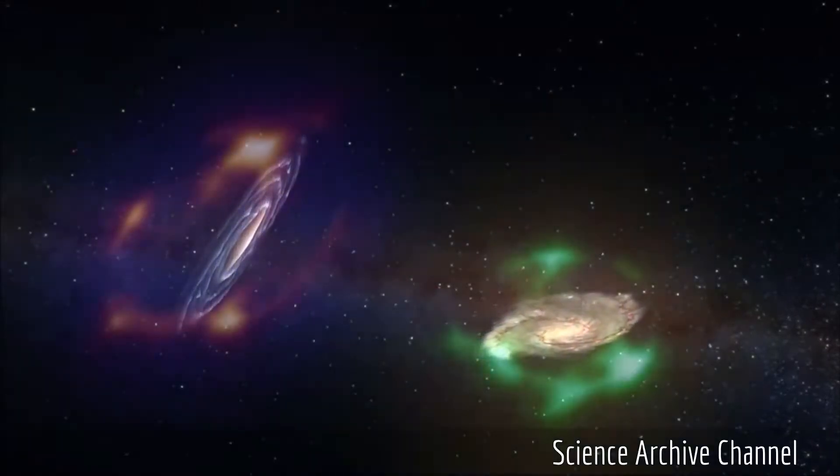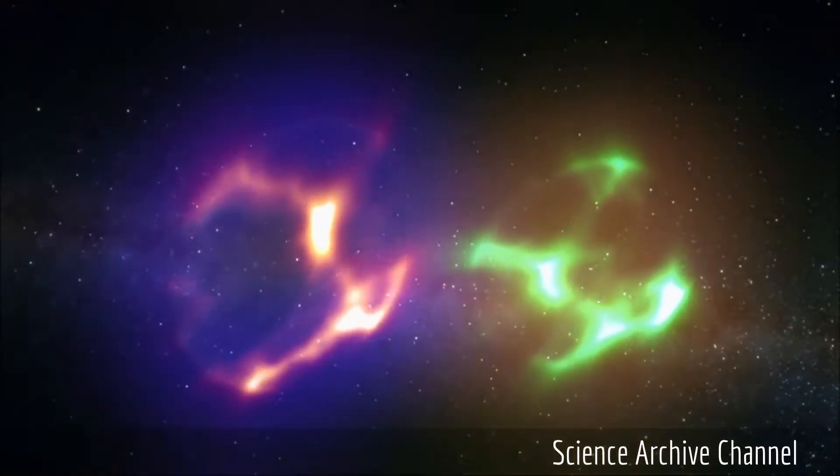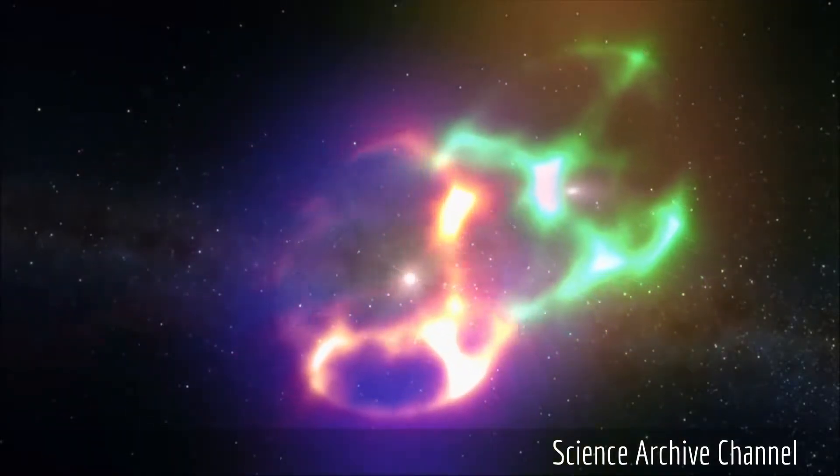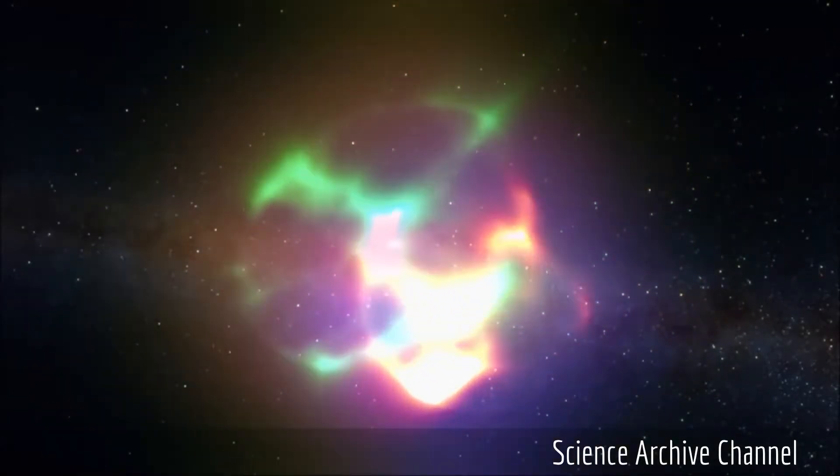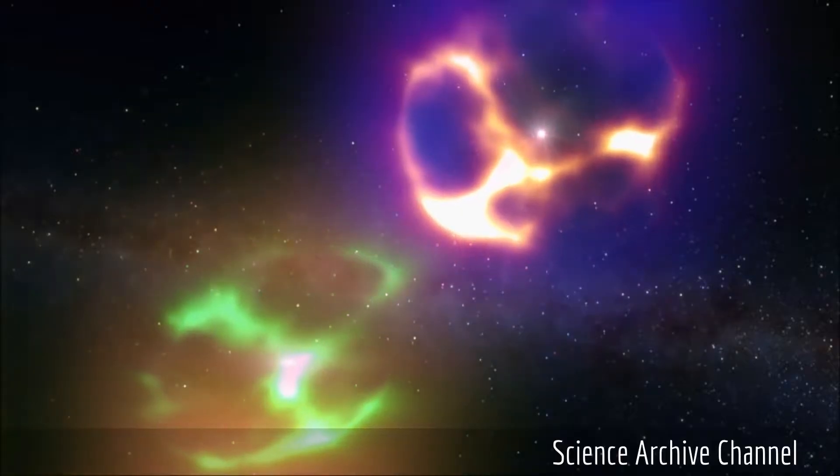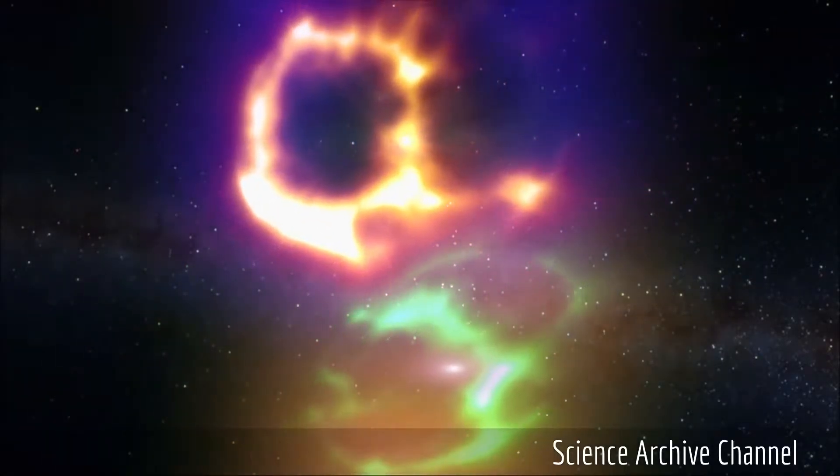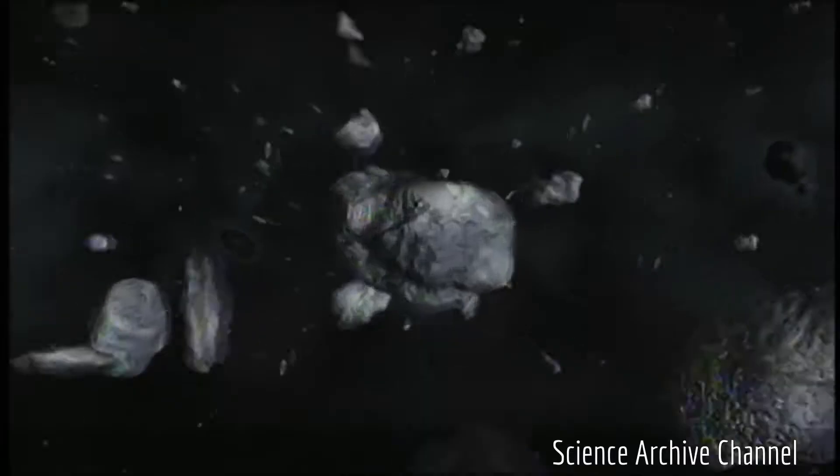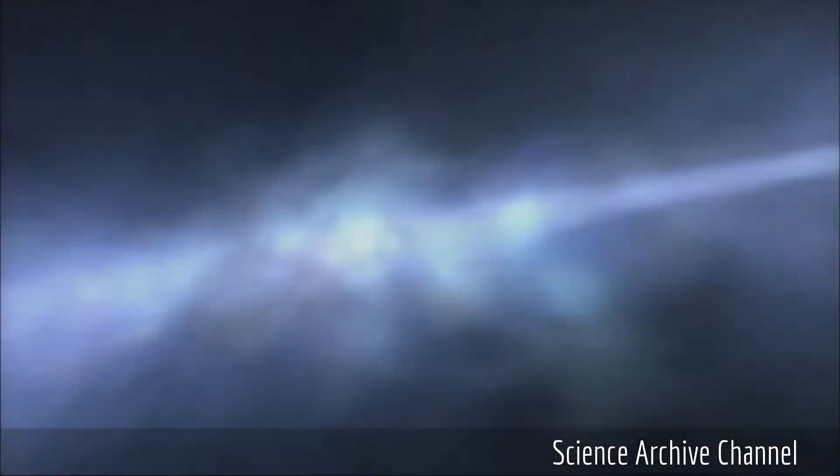But at the point of impact, these galactic dancers will do more than pirouette. Each one has a spiral disk of stars, and then surrounding that, a halo of dark matter, invisible material that we can detect by its gravitational field.